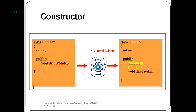As you can see in the slide, there is a class 'Number' with member variable 'no' and a normal member function 'displayData'. Whenever this program is given for compilation, the compiler is going to insert its own constructor which has the same name as that of the class. This is the implicit insertion of a constructor when the user has not written their own constructor.